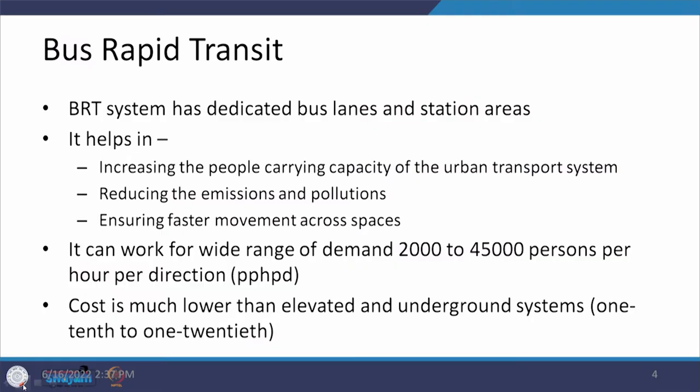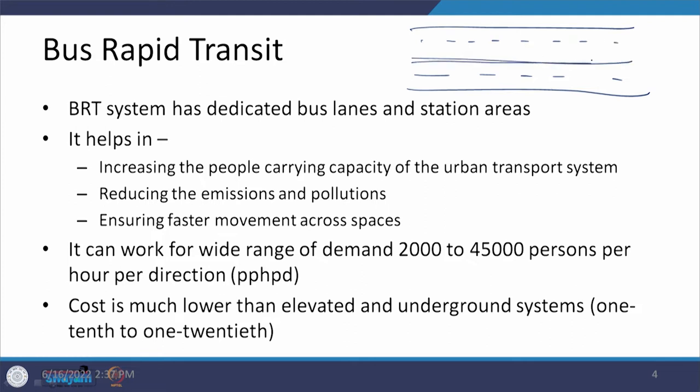In the case of bus rapid transit facilities, we are going to look at the specific things related to the design aspects and not the operational aspects. The BRT system is a case where we are trying to transport people from one location to another by way of a road transportation network where one lane has been dedicated as a bus lane, and only buses are moving in that lane.